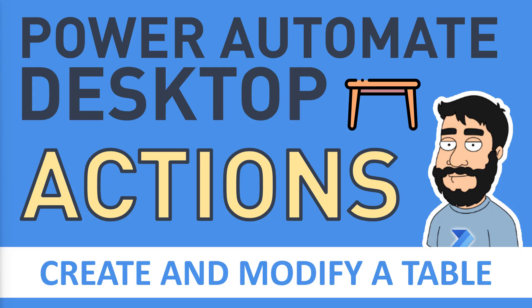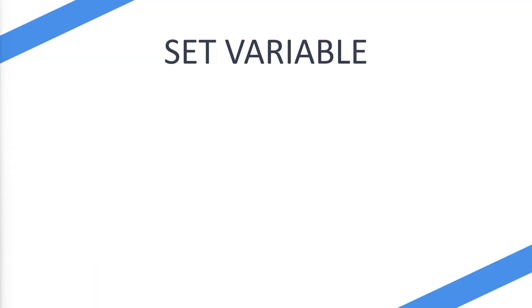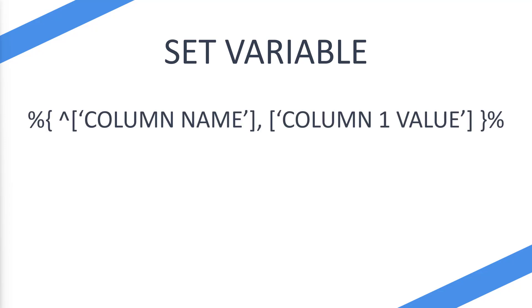Today we're going to be looking at Power Automate Desktop actions, and specifically how to create a modifier table using the set variable action. If you don't know how to use the set variable action, there is a video on my YouTube channel, so be sure to check that out first. If you do understand how to use it, we are going to use it to create a table.